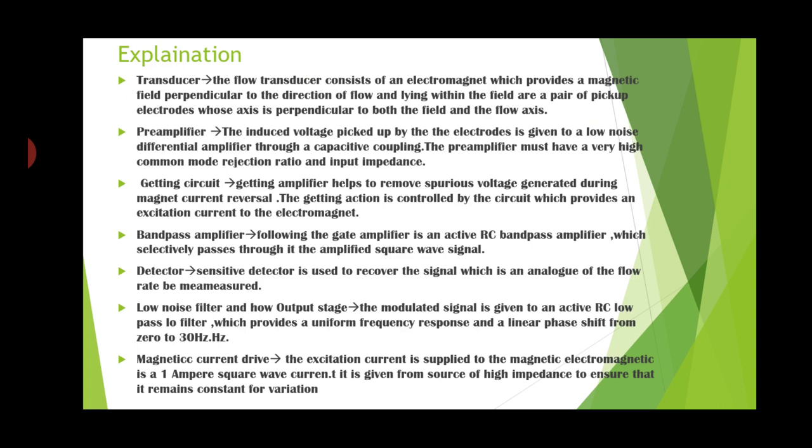The preamplifier must have a very high common mode rejection ratio and input impedance. The gating amplifier helps to remove spurious voltage generated during magnet current reversal. The gating action is controlled by the circuit which provides excitation current to the electromagnet. Following the gate amplifier is an active RC bandpass amplifier which selectively passes the amplified square wave signals. A sensitive detector is used to recover the signals which are an analog of the flow rate being measured.